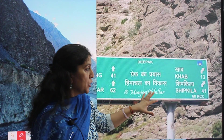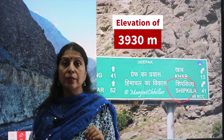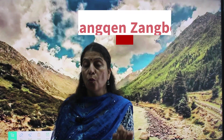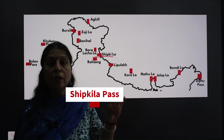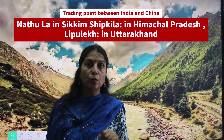The next important pass is Shipki La pass, located at an elevation of 3930 meters above sea level. This pass is also a border post on the India-China border. The river Sutlej, known as Lankuin Zanbo in Tibet, enters India after crossing Tibet through Shipki La pass. It is one of the three border trading points between India and China. The other two trading points are Nathu La in Sikkim and Lipulekh in Uttarakhand.